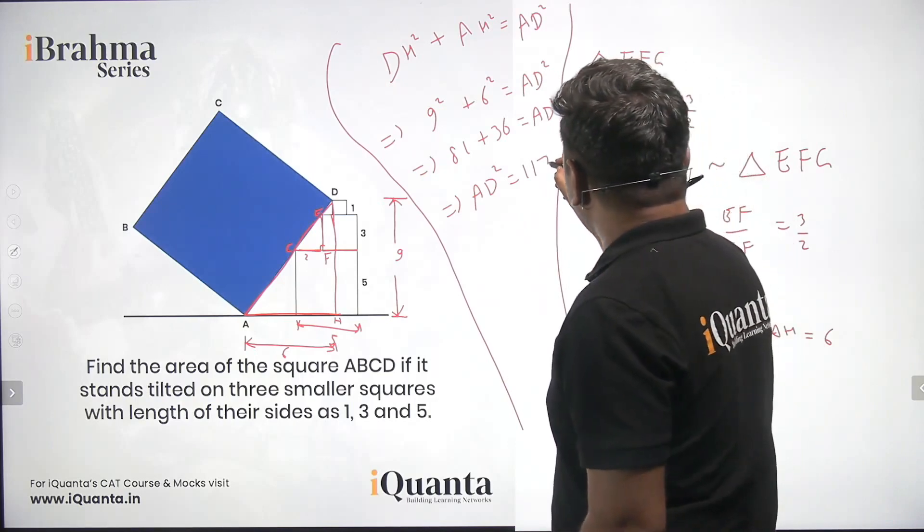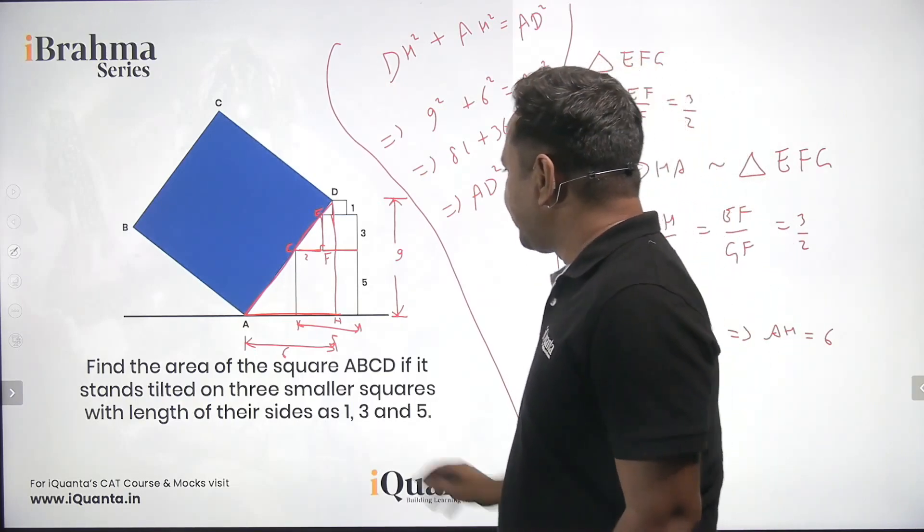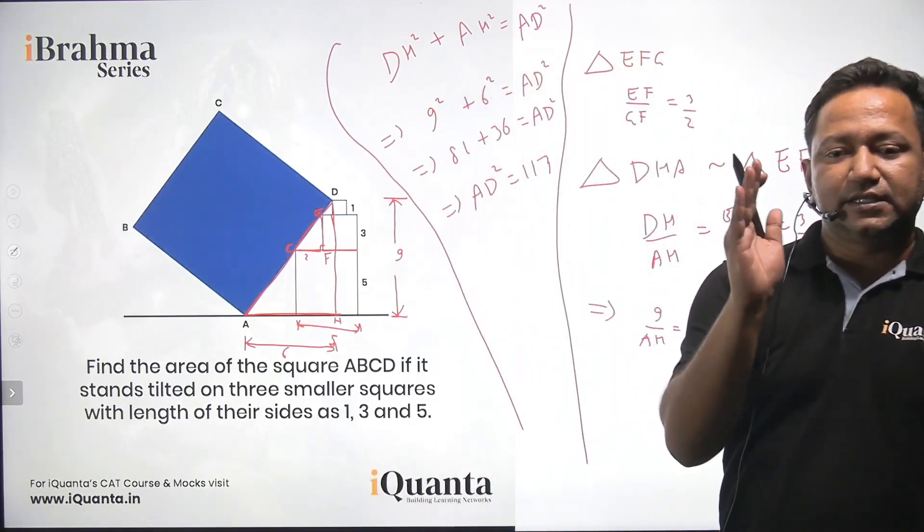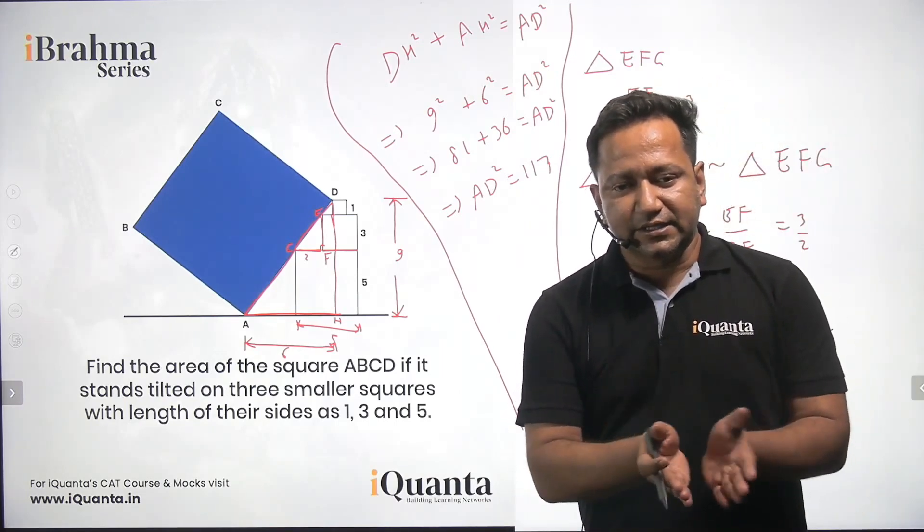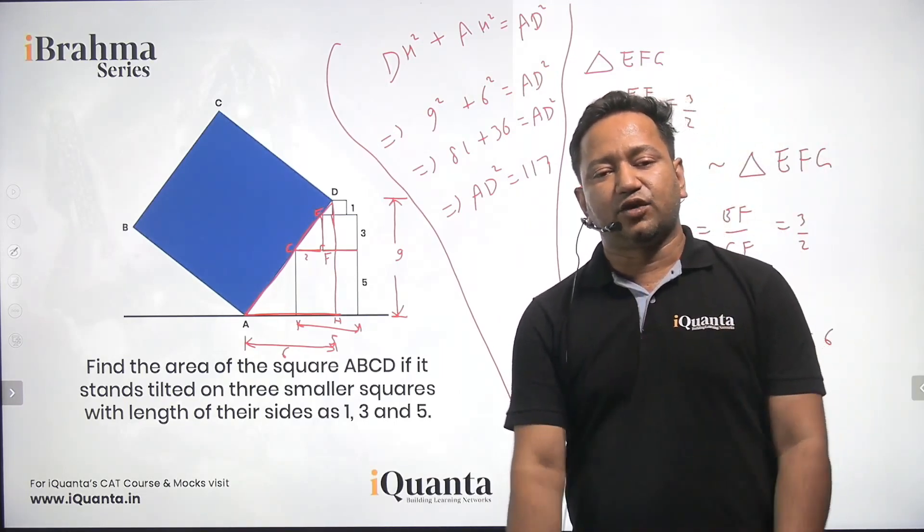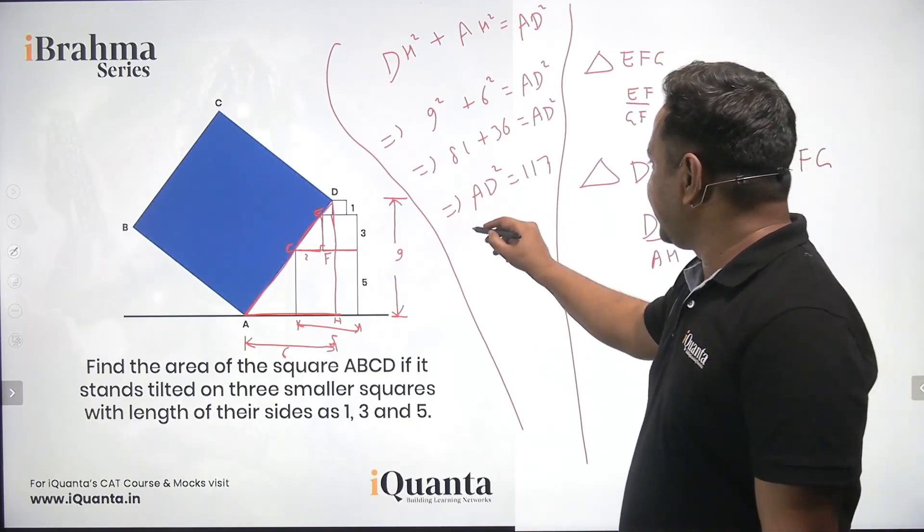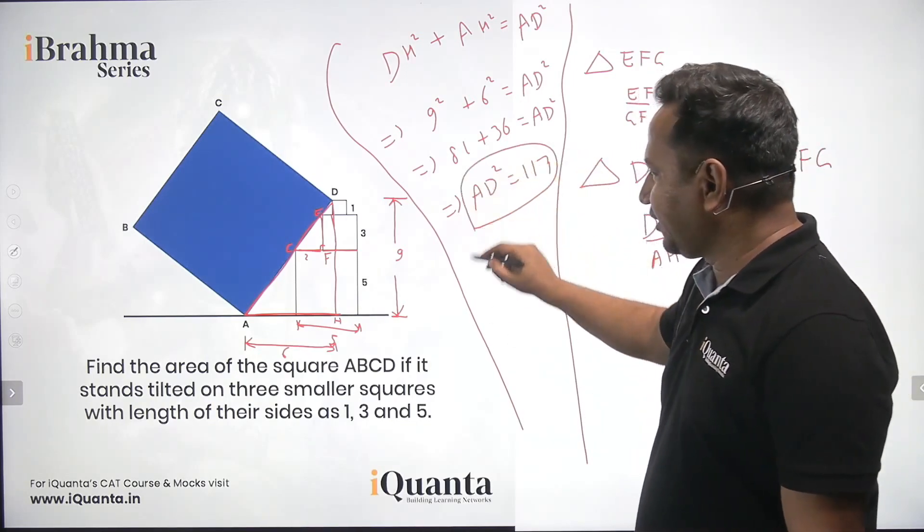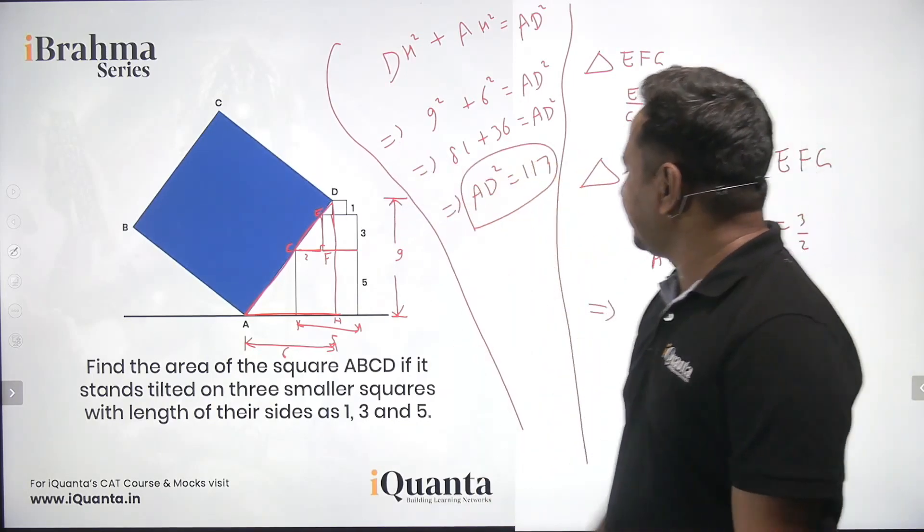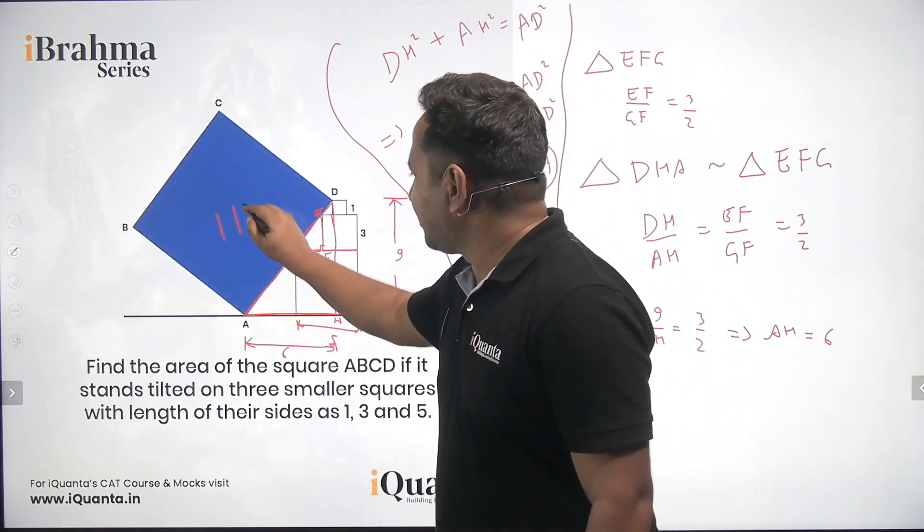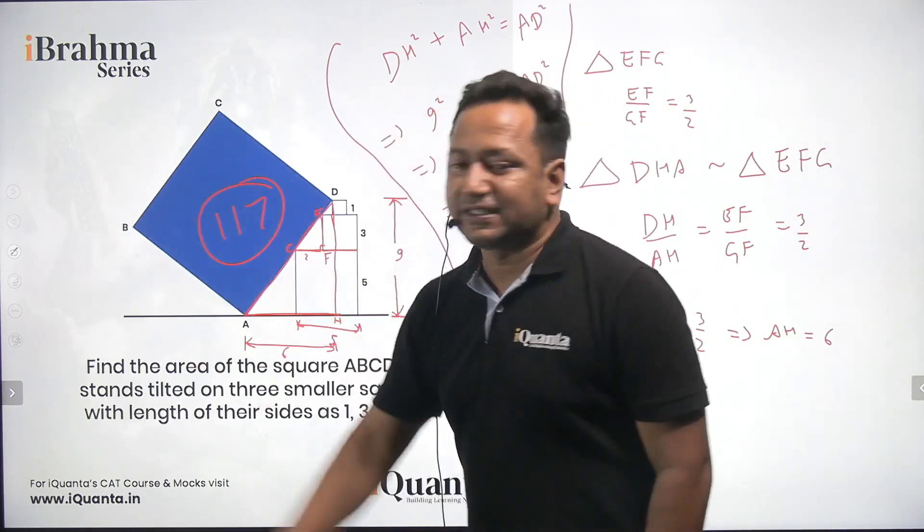We wanted to calculate the area of the square ABCD. And AD is the side of the square. And area of any square is known to be the square of the length of its side. So AD square is essentially the area of the square ABCD, which means our answer is 117 square units.